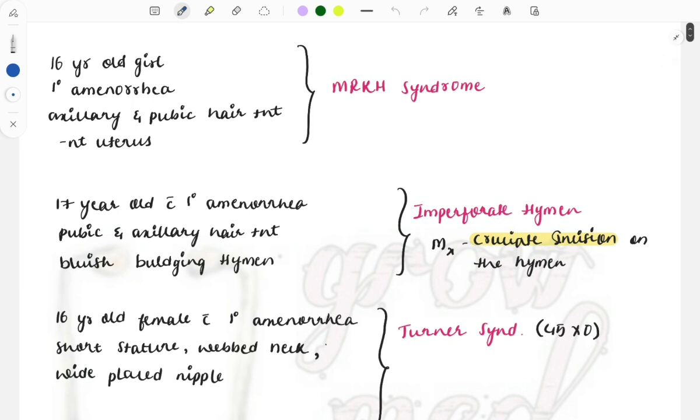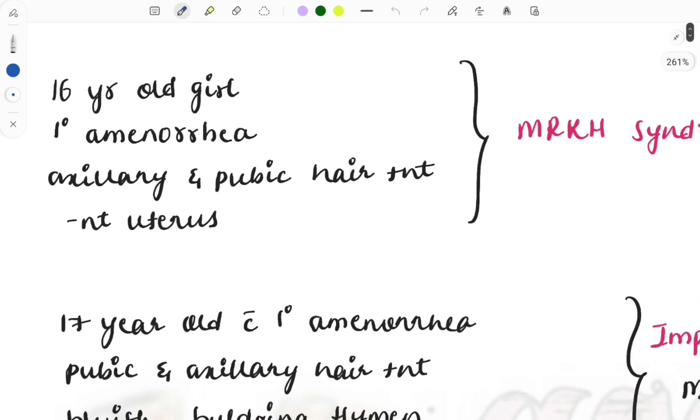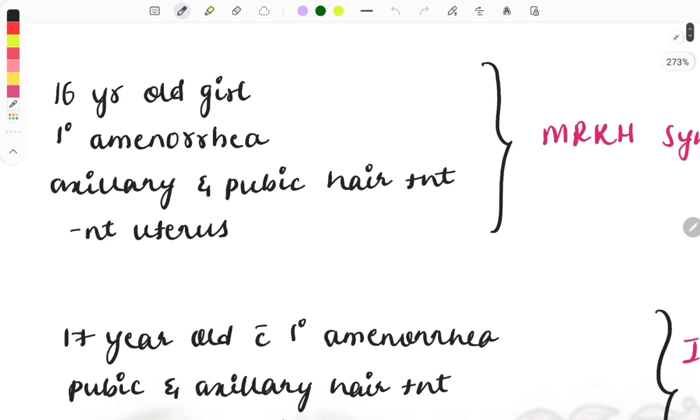The first case: a 16-year-old girl presenting with primary amenorrhea. On examination, axillary and pubic hair are present, but on USG findings you will see absent uterus.